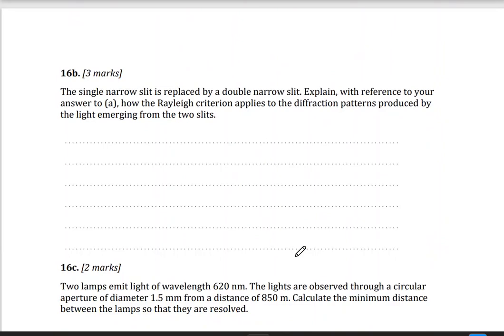Part B. The single narrow slit is replaced by double slit now. Explain with reference to your answer to A, how Rayleigh criterion applies to the diffraction patterns produced by the light emerging from the two slits.